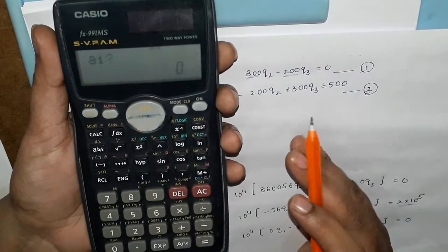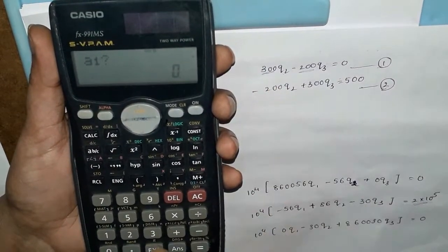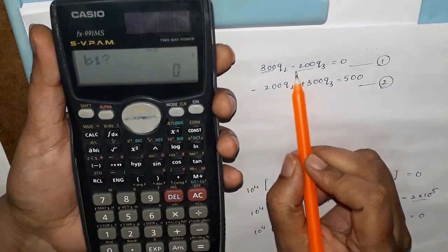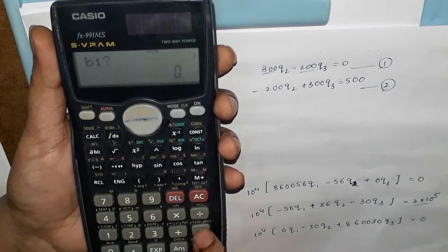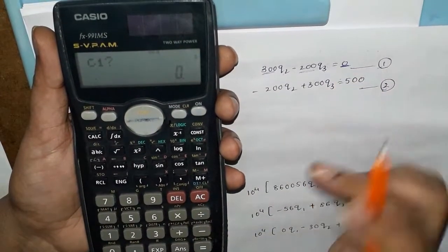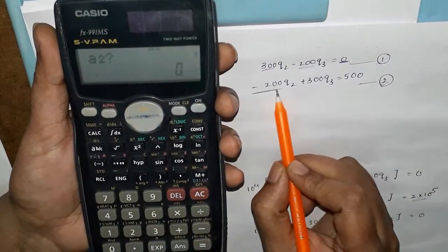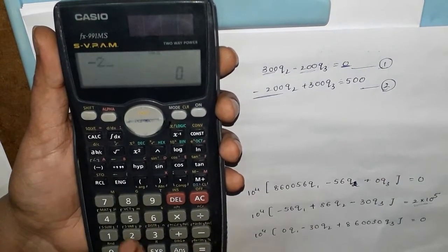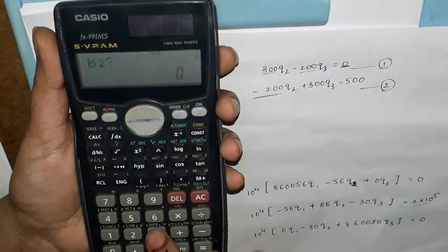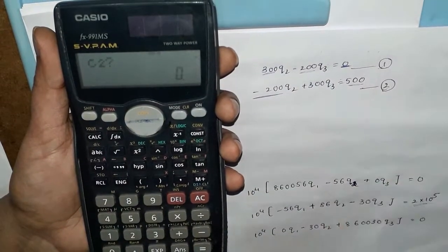We'll enter the constant values. The first unknown coefficient on the left side, we'll take 300. B₁ value minus 200. C₁ value 0 as it is. A₂ value minus 200. B₂ value 300. C₂ value 500.